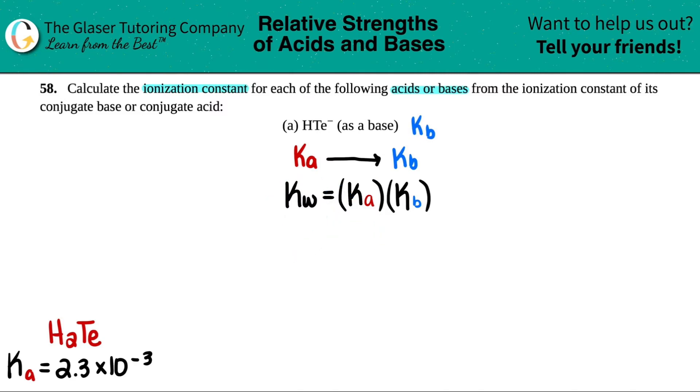So for the simplicity of the video, I'm just going to do that first. So I'm just going to divide. Ka is coming down below. And now we have a little formula, Kw divided by Ka equals Kb.